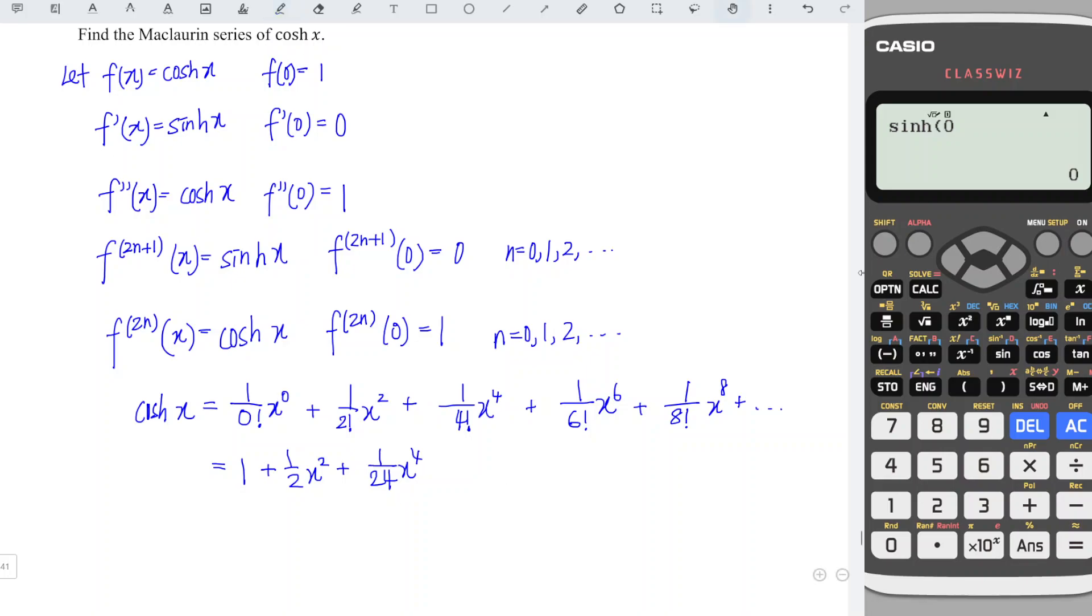And if we're not sure, we can press the calculator to check. So 4 factorial is equal to 24. Then 6 factorial, we have 720 x to the power of 6, and 8 factorial, we have equal to 40,320 x to the power of 8 and so on.